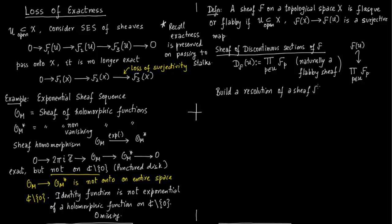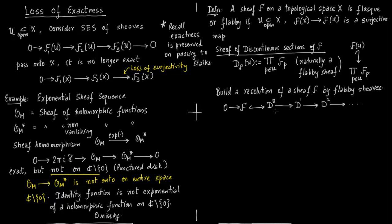The important thing we are trying to achieve here is how to form a resolution of a sheaf. We want to form a chain complex out of a sheaf so that we can use cohomology theory on it. For that purpose we are writing this sheaf of discontinuous sections. You take a sheaf F, embed it into D0, where D0 is the sheaf of discontinuous sections of F, and then we will define D1, D2, and so on.